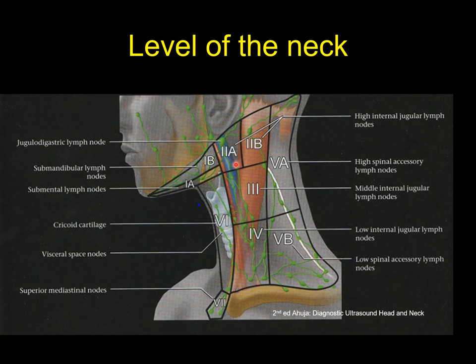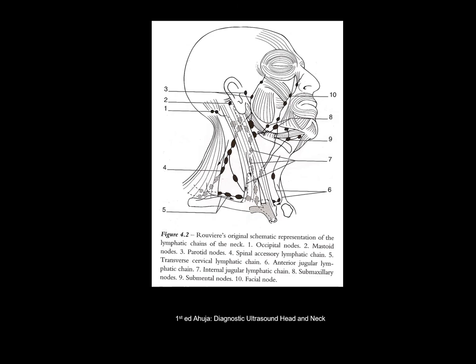Level 2 receives drainage from the mastoid and post-auricular lymph nodes and the occipital nodes. This drains into the internal jugular chain nodes, which run through levels 2, 3, and 4. These jugular lymph nodes are divided into the higher, mid, and lower. Over here are the transverse chain and the spinal accessory lymph nodes. Here you have level 6, which is the anterior portion of the neck below the hyoid bone, and going past the sternal notch is level 7. This is the Ronville original representation of the lymphatic lymph node levels, and you can go through the names of the nodes in your own time.